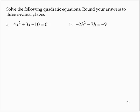The quadratic formula says if ax squared plus bx plus c is equal to 0, then x is equal to negative b plus or minus the square root of b squared minus 4ac, all divided by 2a. To use the quadratic formula, we have to have a quadratic equation in standard form — ax squared plus bx plus c equals 0 — and we have to memorize this formula.